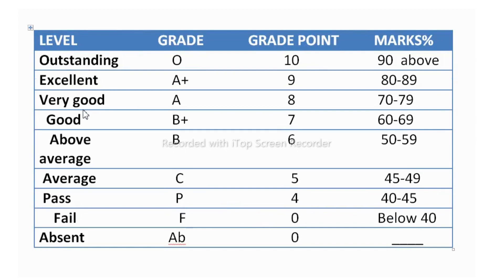There are the levels: outstanding, excellent, very good, good and above. The grades will be for outstanding O, excellent A plus, very good for A, good for B plus. Then average B is there. Then average C, pass P and for fail, F is there and for absent, AB absent is there.